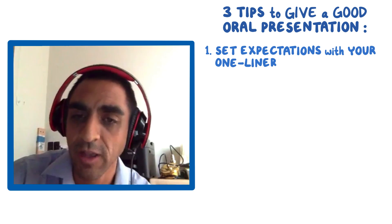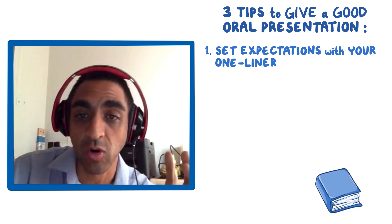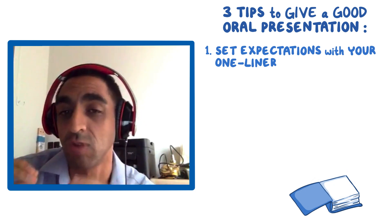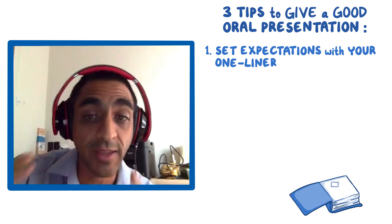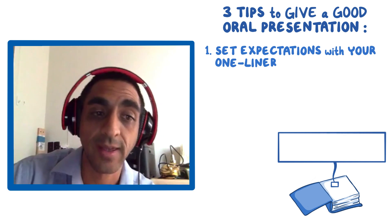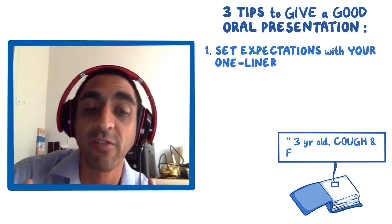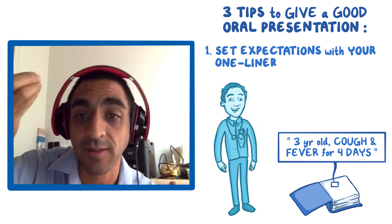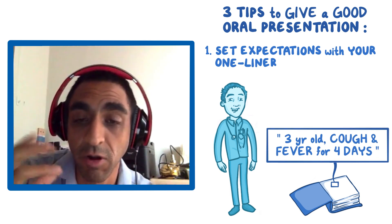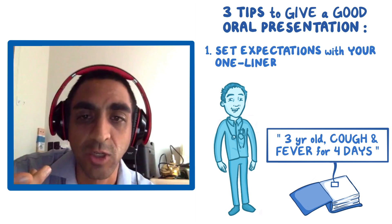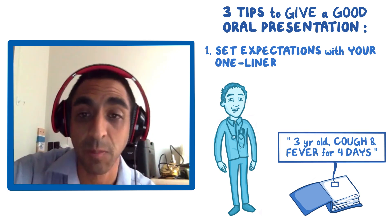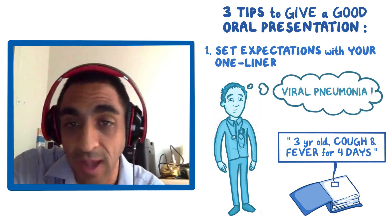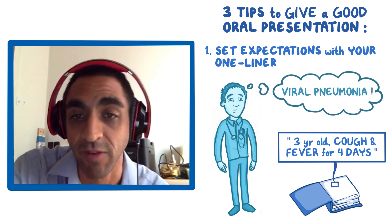What's the one-liner? That's where you take an entire story and try to extract the bits most relevant for a person to hear. For example: a three-year-old with cough and fever for four days. What thoughts should be jumping into your head? For me, as a pediatric infectious disease doctor, I think: viral pneumonia — that's the most common thing in a three-year-old with cough and fever for four days.